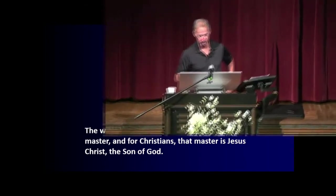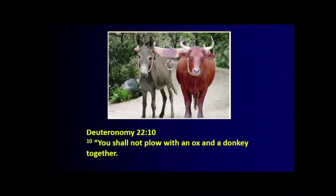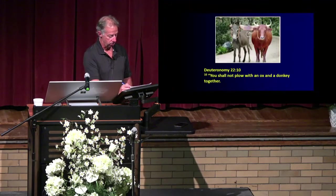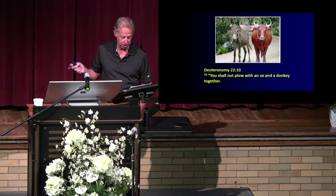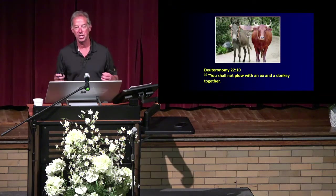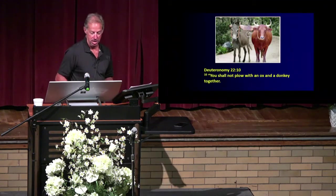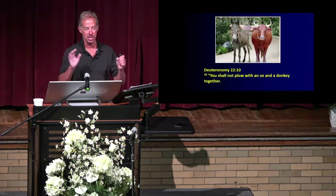Moses gave the people of Israel an object lesson about yokes that teaches us an important spiritual principle. He said you should not plow with an ox and a donkey together. The reason is obvious — they're radically different and it would be difficult for them to work together. The Apostle Paul used the same principle to instruct the Corinthians to be separated from false teachers: 'Be not unequally yoked.' In Jewish law the donkey was unclean but the oxen was clean; the donkey is impulsive and independent while the oxen is slow and deliberate. They just would not work very well together.